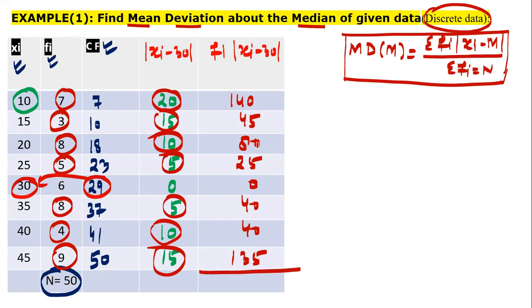And the year sum. 140. 45. 80. 25. 0. 40. 14. 135. And this is summation Fi |Xi minus M|. Its value. Adding these two. You will get 505.